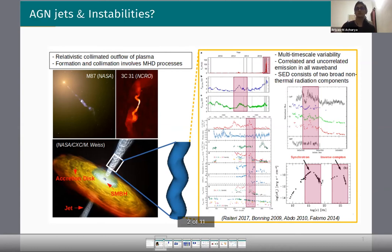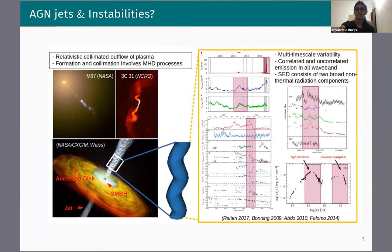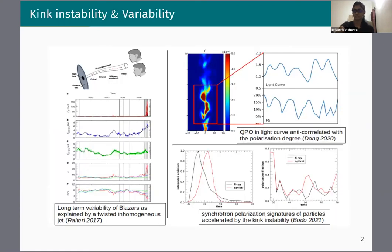I'll talk about the kink instability, which is considered to be one of the mechanisms that could possibly trigger jet radiation and particle acceleration. When a plasma column or jet is prone to kink instability, there is a transverse deflection of the plasma column from its axis. With the evolution of time, the instability evolves and the jet takes a curved or helical structure, depending on the perturbation provided.